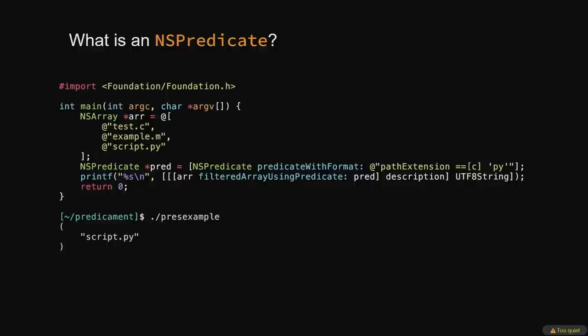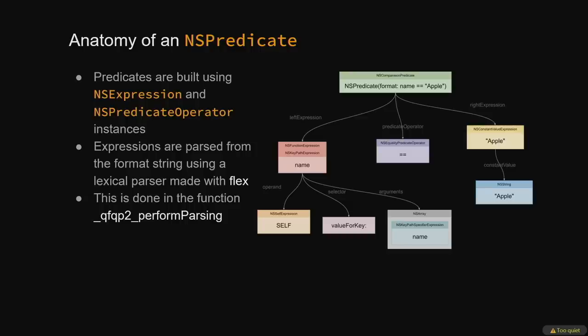Here's an NSPredicate in action: a short program with an array of file names, filtered using the predicate 'pathExtension equals py', with the resulting array containing just 'script.py'. That string is parsed by flex-generated code in the Foundation framework into pieces called NSExpressions and NSPredicateOperators. For example, the predicate 'name equals apple' is parsed into three pieces: the NSKeyPathExpression 'name', the NSEqualityPredicateOperator, and the NSConstantValue containing the string 'apple'. The KeyPathExpression is also a function expression with operand 'self', selector 'valueForKey', and key path specifier 'name'.